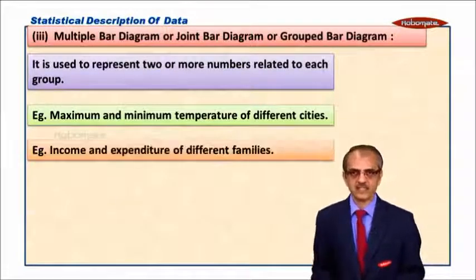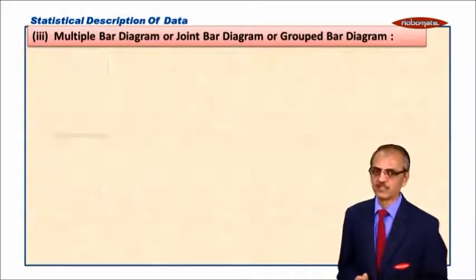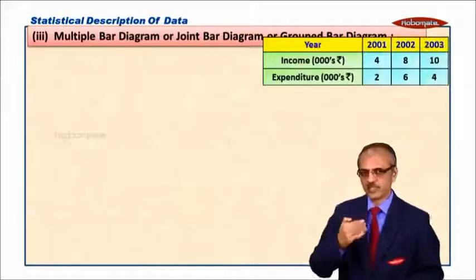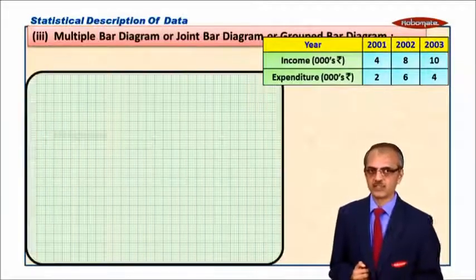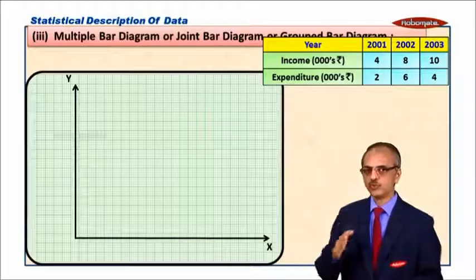Maximum and minimum, two or more numbers for different cities for each group. And second one is income and expenditure of different families. Now let us take one simple example. Year-wise we have been given income and expenditure, two numbers. You know how to draw this.